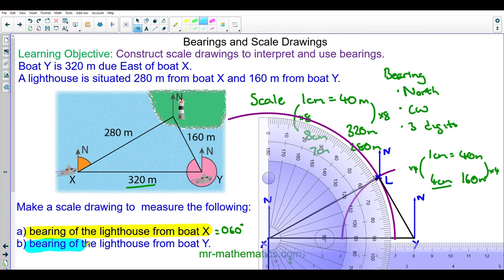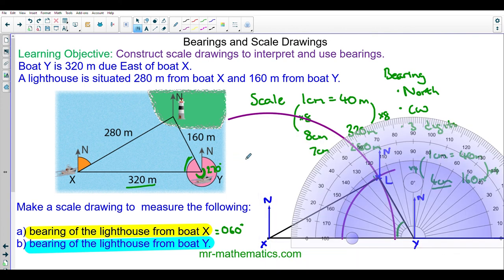Question B, the bearing of the lighthouse from boat Y. If we look at our diagram, we have three quarters of a turn which is 270. We're going to measure this angle here and add this onto 270 and that will be our bearing. We're going to measure angle X Y L. You can see this again is 60 degrees. So we have 60 degrees plus 270, which in total is 330 degrees.